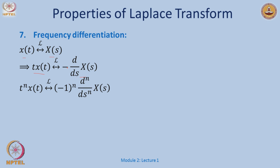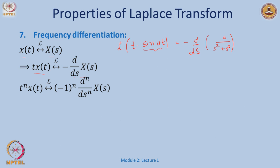For example, to find L{t·sin(at)}: by the frequency differentiation property, this equals −d/dS[a/(S²+a²)], which gives 2aS/(S²+a²)². This property is useful when multiplying by t raised to the n-th power.